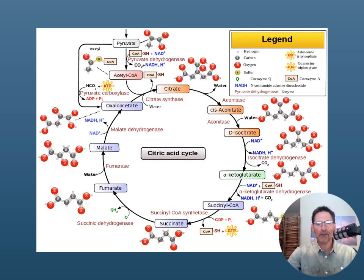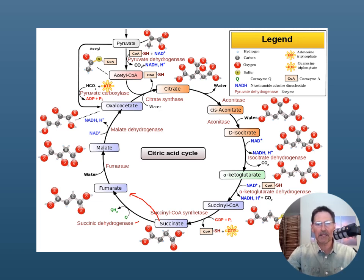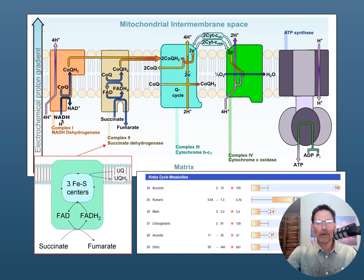Looking at the Krebs cycle, also called the citric acid cycle, we can see succinic dehydrogenase — also called succinate dehydrogenase — right there. What it does is convert succinic acid to fumaric acid, or in base form, succinate to fumarate. This enzyme is actually linked to the electron transport chain as well, specifically at complex two. We have four complexes that make up the electron transport chain, plus an ATP synthase — sometimes called complex five — and all of these make a functional unit as part of the mitochondrial electron transport chain.